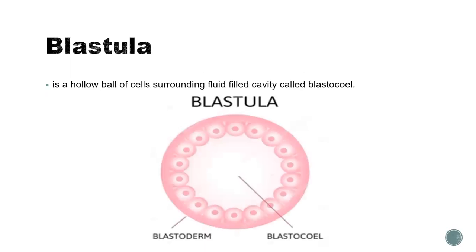During this period of cleavage, the embryo uses materials stored in the yolk as a source of energy. Thus, in the developing embryo, a cavity known as the blastocoel appears in the center, as blastomeres move to the surface where exchange of gases and other materials between the embryo and environment takes place.